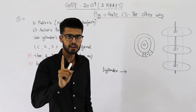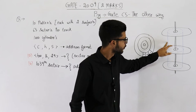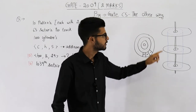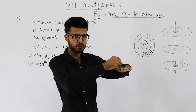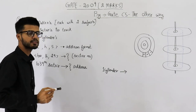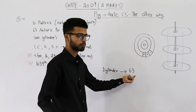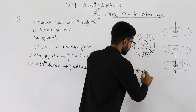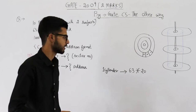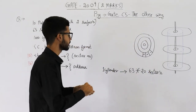Each surface will have one track corresponding to a cylinder. That means one cylinder will have 63 sectors on each surface — 63 on the top platter's topmost surface, 63 on its lower surface, and so on. For each surface we have 63 sectors, so 63 sectors per surface into 20 total surfaces gives the number of sectors in one cylinder.